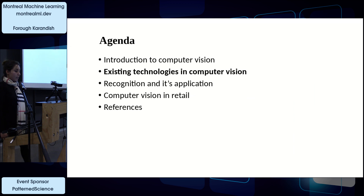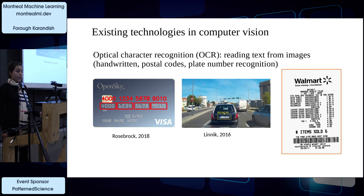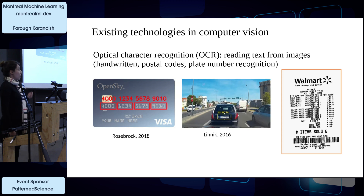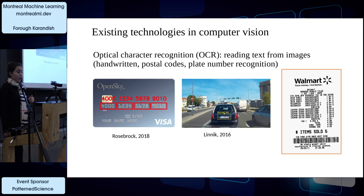The first existing technology is optical character recognition (OCR). This technology helps to read text from images—it could be handwritten text, postal codes, or plate number recognition. It's used in fraud detection in banks for getting information from checks and reading credit card numbers, as well as plate recognition and receipt recognition to track customer buying habits.